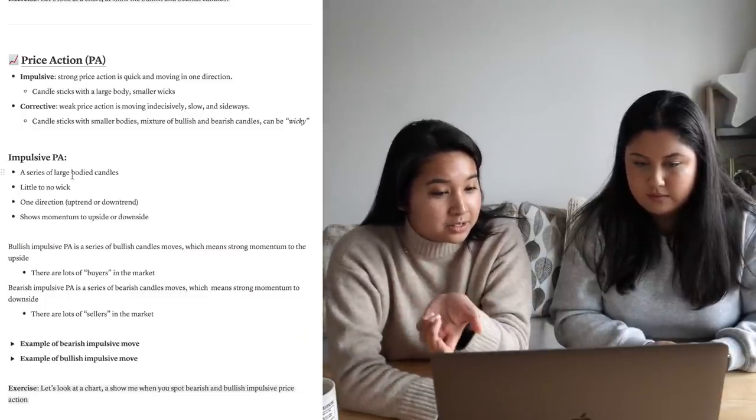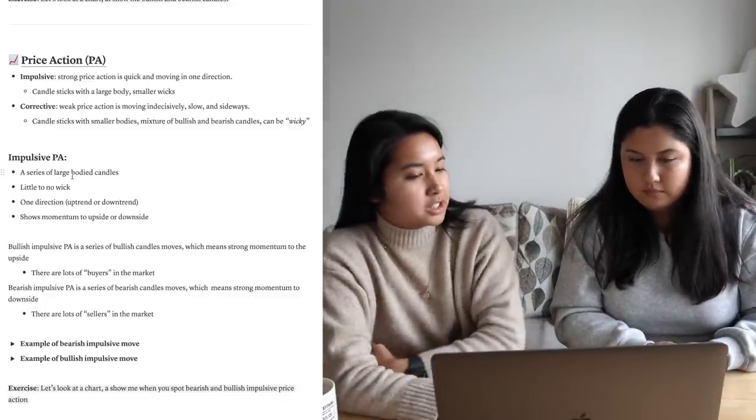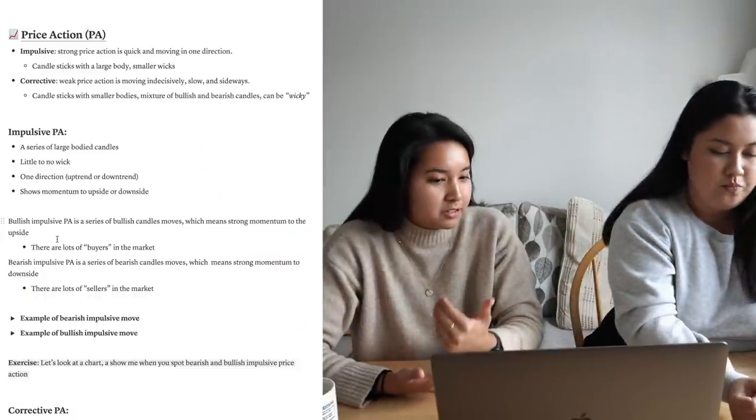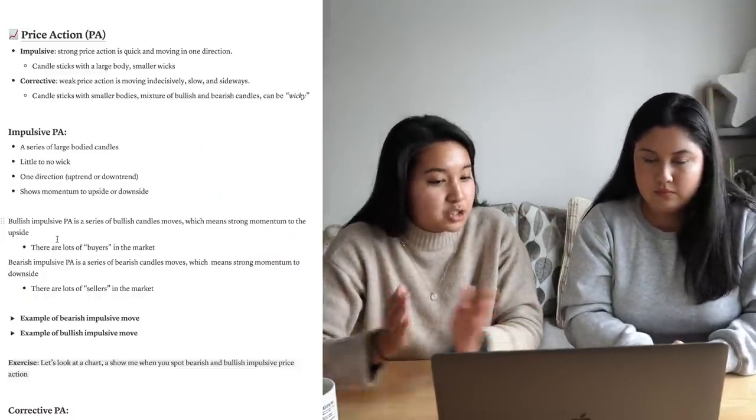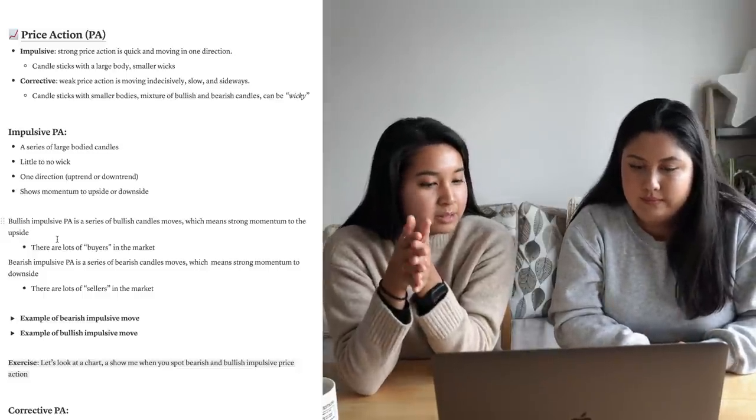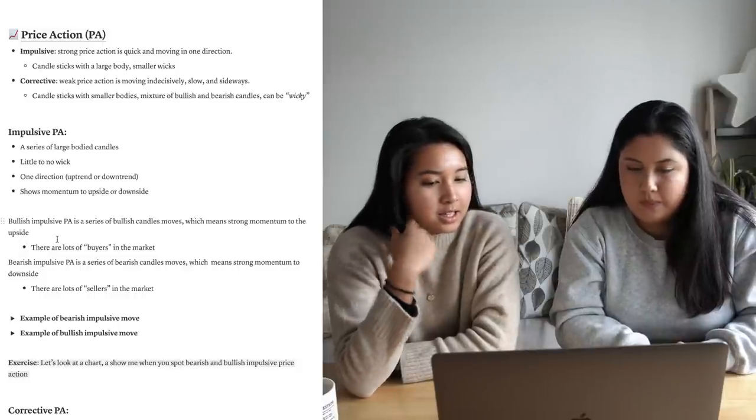Impulsive: a series of large bodied candles, little to no wick, preferably in one direction, showing momentum to the upside. Momentum is so important — remember, we're trading with the trend. We like to spot where momentum is and ride it. If it's dropping, do we want to sell or buy? We want to sell. When we're selling, we're anticipating the market to move down. When we're buying, we're anticipating the market to go up. Bullish impulsive price action means strong momentum to the upside with lots of buyers. Bearish impulsive is the opposite — loads of sellers, strong momentum to the downside.